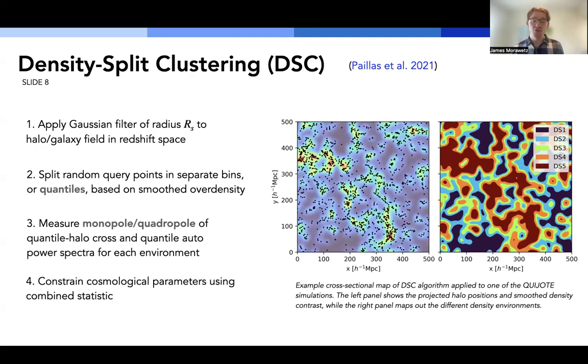So one of the methods that we propose to do this is density split clustering, which was introduced by my co-supervisor and collaborator, Enrique Pais. And the idea behind density split clustering is you want to measure clustering as a function of local density environment. So if we start off with some sample volume that's filled with halos and galaxies, we can then smooth that volume using some smoothing radius, typically a Gaussian filter. And then we take a large number of query points that fill up that volume and split them into separate density bins or quantiles based on the smooth over density at their locations.